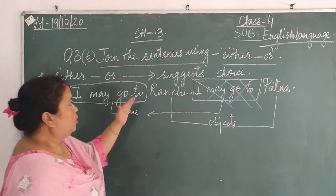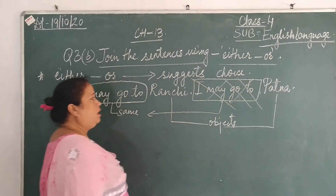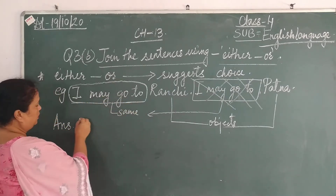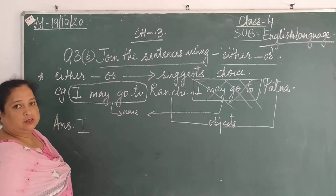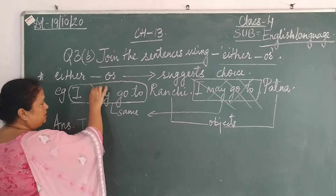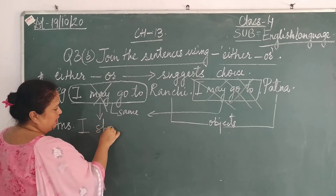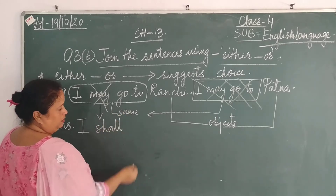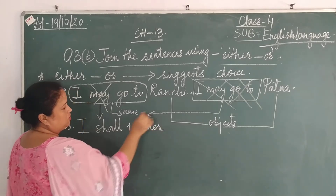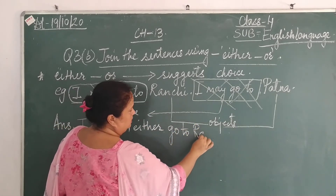So how do we join these sentences? We join them by using 'either...or.' We begin with the first sentence. There is one slight change — instead of 'may,' we use the word 'shall.' So we write: 'I shall either' — and after 'either,' the verb is 'go.' Go where? To Ranchi.